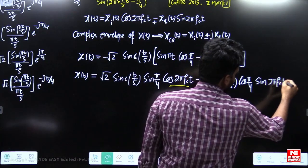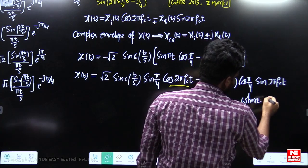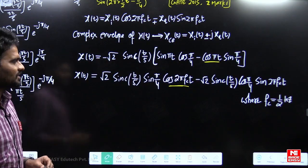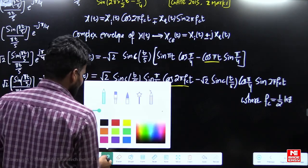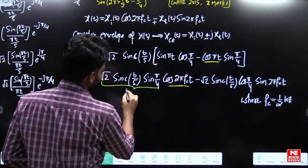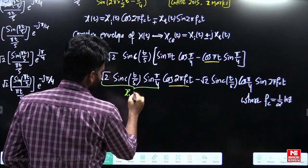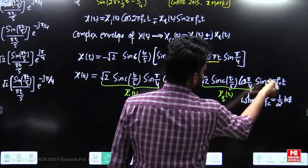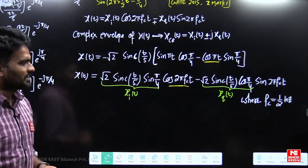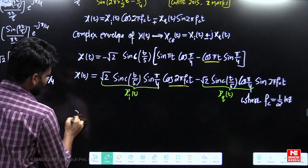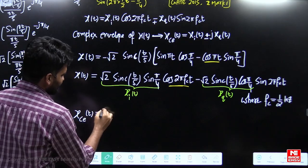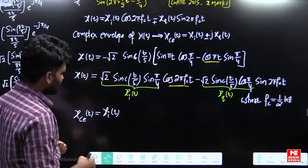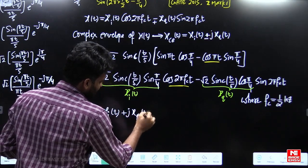We have the bandpass signal centered at fc = 1/2 Hz, now written in the form x_i(t)·cos(2π·fc·t) − x_q(t)·sin(2π·fc·t). So the in-phase component x_i(t) and quadrature component x_q(t) are identified. The complex envelope is then x_e(t) = x_i(t) + j·x_q(t).